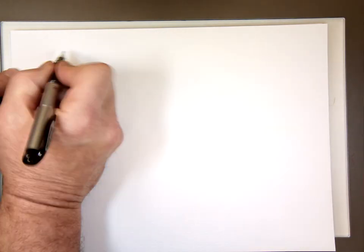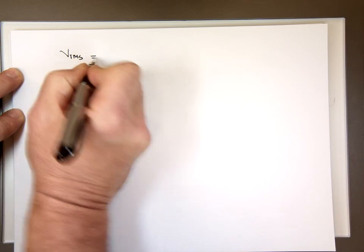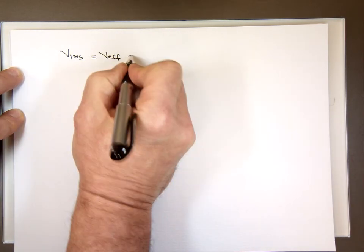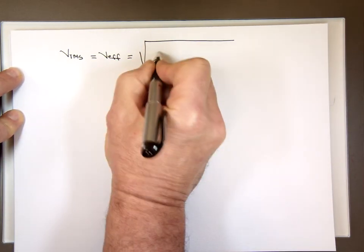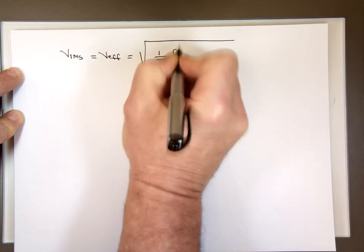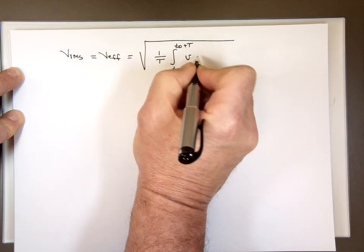So how do you convert the RMS value to a peak value then to a DC value? So here is the VrMS, which is called V effective. And the definition for that, or the way we calculate that, 1 over the period, the integral over a full period of the voltage squared.